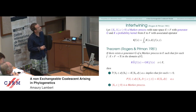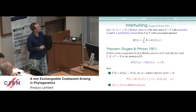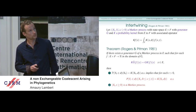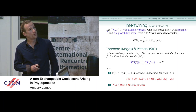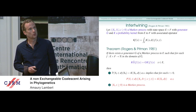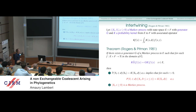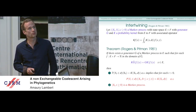What is intertwining? You take a two-dimensional Markov process and want to know whether one of the two coordinates is itself a Markov process. You take a Markov process with generator G-hat, and assume you're given a probability kernel K with its associated operator acting on mappings from E×F to R. A theorem by Rogers and Pitman says that if there exists a generator G of a Markov process in E such that for each F in the domain of G-hat you have the intertwining equality, then — provided you start in the appropriate state — X is a Markov process with generator G.